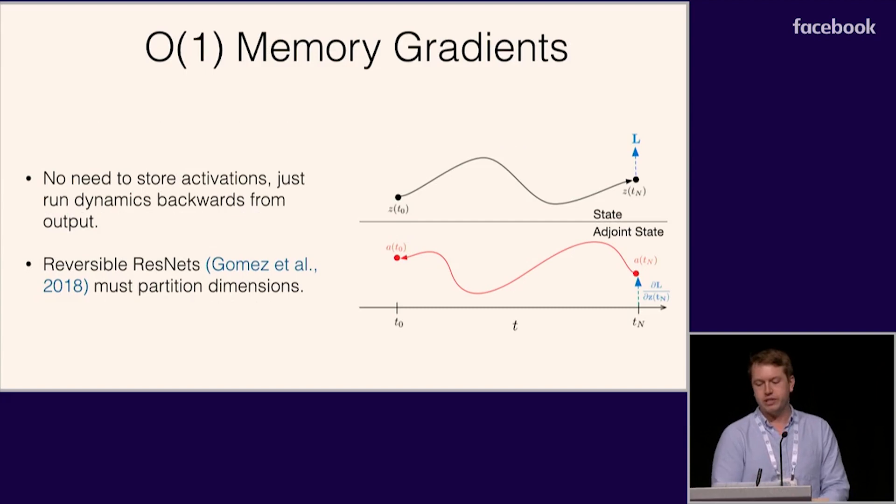Surprisingly, this whole procedure can be done with constant memory costs. This is because we don't store the intermediate activations. We just reconstruct them as we go by running the original system backwards in time. Recent work on reversible residual networks constructed neural networks that did have the same constant memory property, but it required restricting the architecture of the layers. Our approach works automatically for any differentiable dynamics.